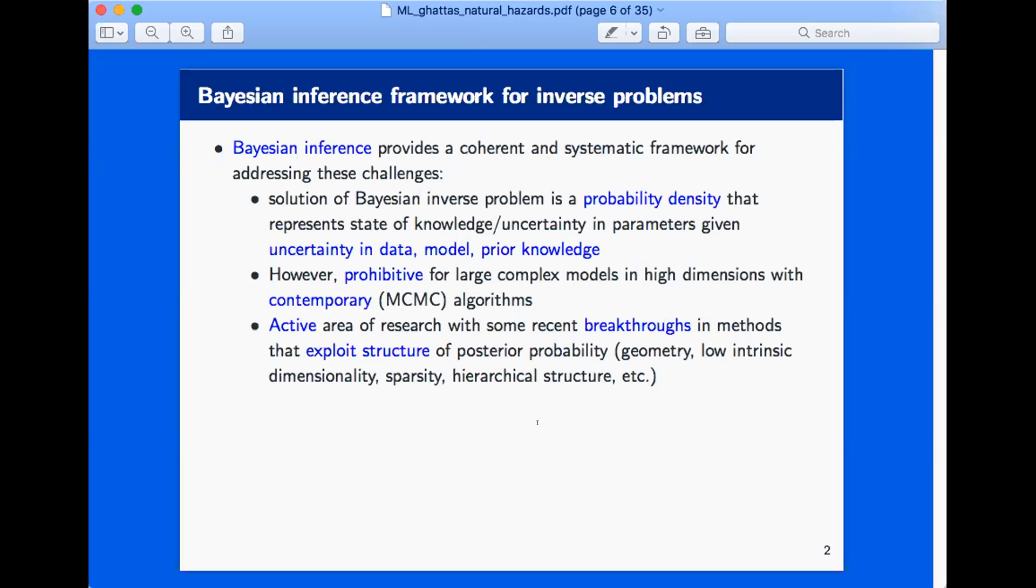With expensive forward models that might take hours on a supercomputer to execute, with parameter spaces that number in the hundreds of millions, off-the-shelf Bayesian inversion methods just don't work. You can't solve a model millions of times as you would need in one of those things. So there's an active area of research to try to make Markov chain Monte Carlo methods, which are the workhorse of Bayesian inference, tractable for these sorts of problems.